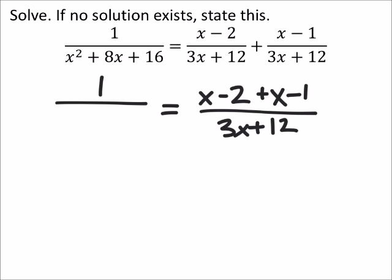And this is 1 over, well, I'm going to go ahead and factor that, x squared plus 8x plus 16. So, 16, two factors that would add up to 8 would be 4 and 4. That means I've got x plus 4 and x plus 4 factored out.